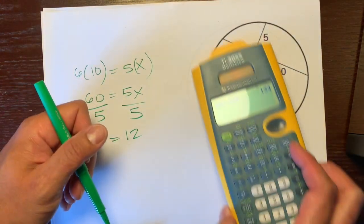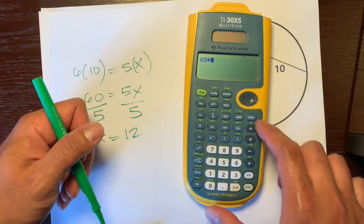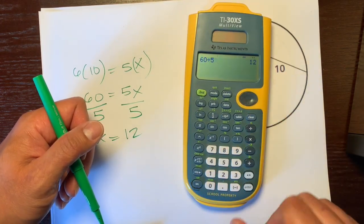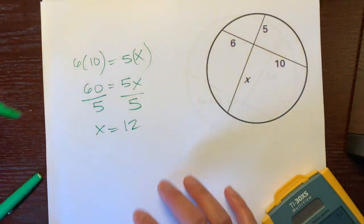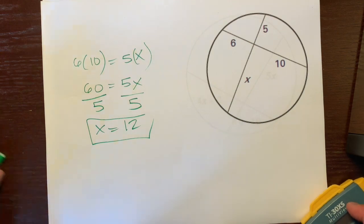I believe x is equal to 12. Is that correct? I think that is correct. 60 divided by five—yeah, my mental math is correct. So x equals 12. So there's the first example.